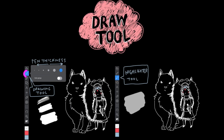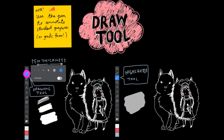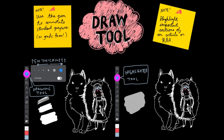The draw tool selects the pen. You can press and hold to choose the pen thickness. The tool beneath this selects the highlighter. You can't change the thickness if you use this tool.